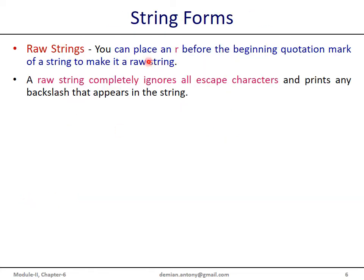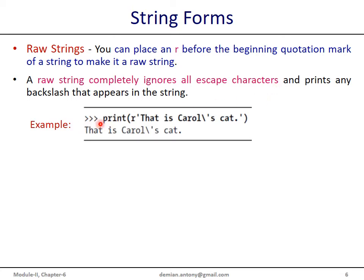String forms: if we place the character R as a prefix to a string, then the string is called a raw string. The speciality of a raw string is that it completely ignores all escape characters present inside the string. Here we have marked a string as a raw string with the character R at the beginning, before the single or double quotation. You can see there is no effect of the escape sequence backslash-apostrophe.